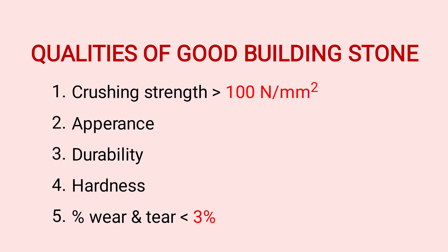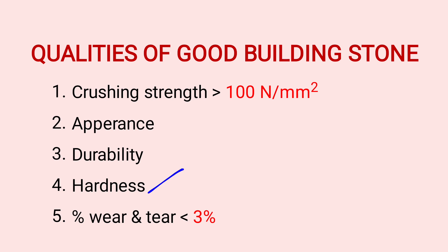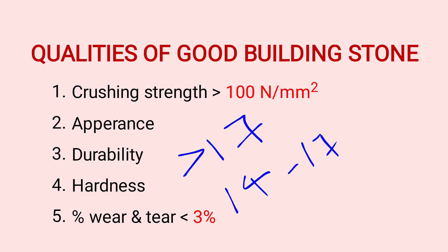Qualities of a good building stone: Crushing strength greater than 100 N/mm². Appearance should be good with uniform color. Durability — must be durable and resistant to weathering agencies. Hardness coefficient: greater than 70 is good for road work; 14 to 70 is medium hardness; less than 40 is poor hardness.